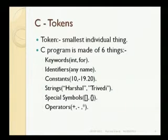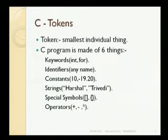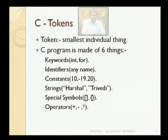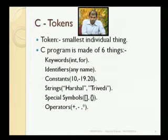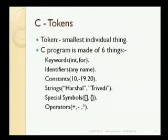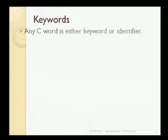Keywords are the words which are inbuilt in C. Identifiers are any name which we give in a program. Constants — if you are defining any value like 10 or 19.20 as shown in the slide, they are known as constants. A string is a collection of characters. Special symbols are curly brackets, round brackets, and so on. Operators we will look at in detail.